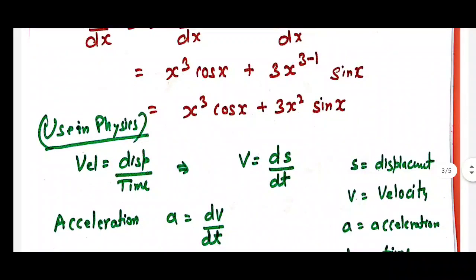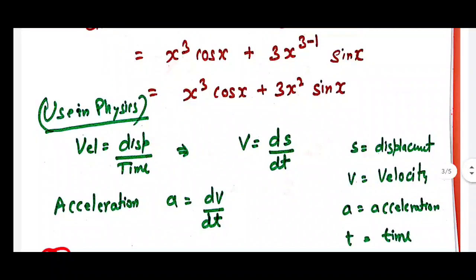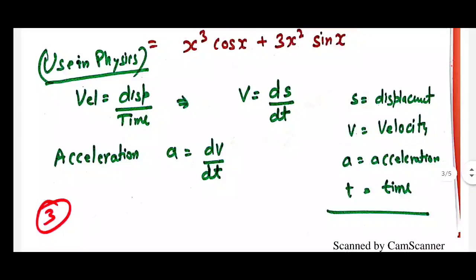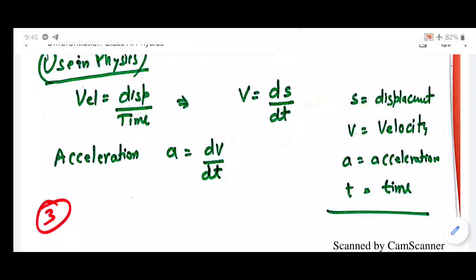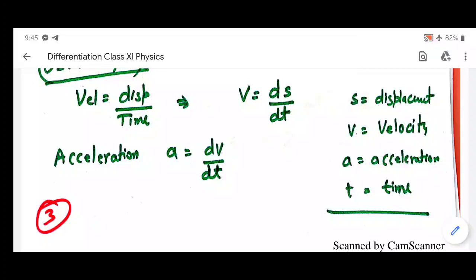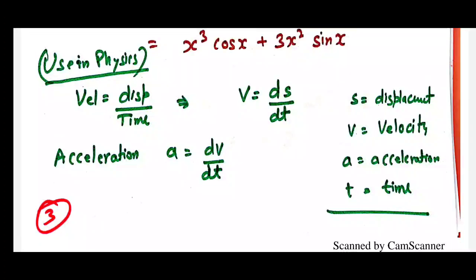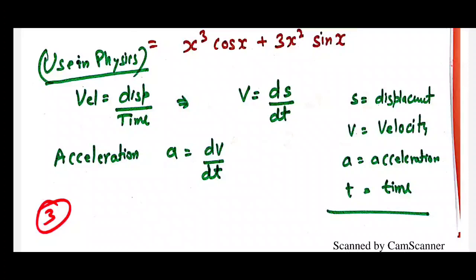You might be thinking why we are studying this mathematics and what is its use in physics. As you have studied in ninth standard, velocity equals displacement upon time. If the velocity or displacement is continuously changing, you write it as v equals ds/dt — the differential coefficient of displacement with respect to time. Similarly, acceleration equals dv/dt, the differential coefficient of velocity with respect to time, which means acceleration is the rate of change of velocity. In later videos I will show how this is used in detail.